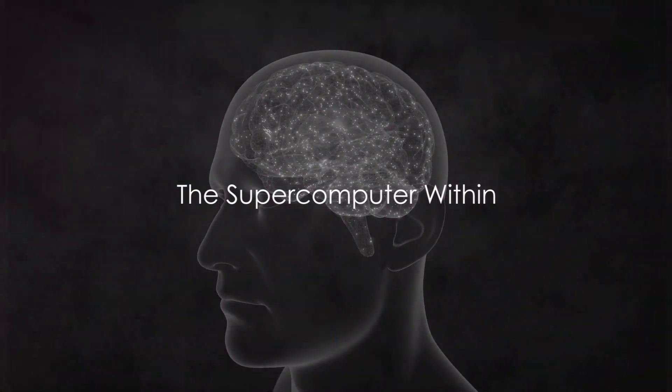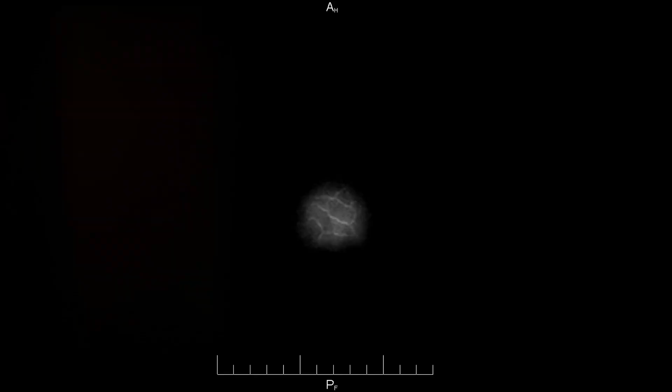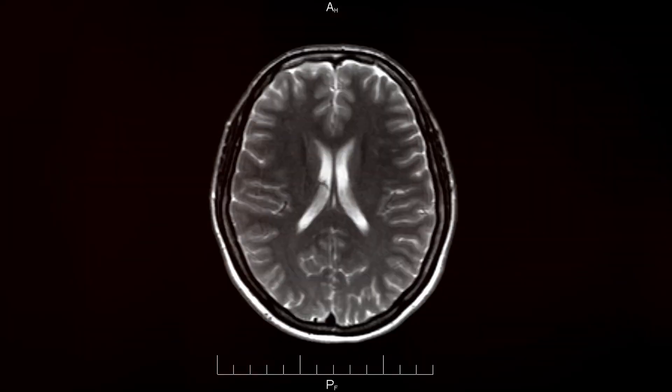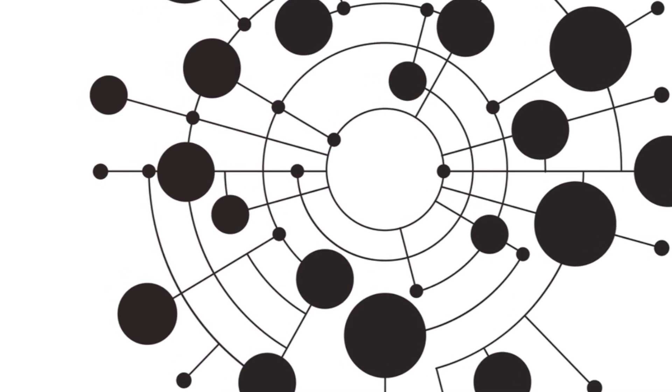Did you know that your brain can process information at a speed of 120 meters per second? That's faster than Usain Bolt sprinting. It's like having a supercomputer inside your head, an intricate network of complexity teeming with capabilities that outshine any artificial machine.